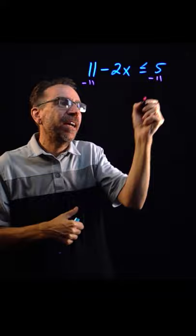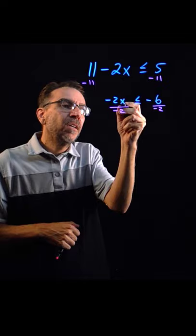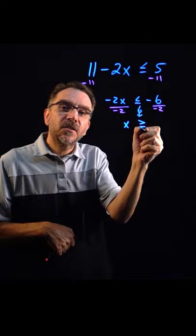The idea is we want to isolate x by itself. Now remember, whenever you divide or multiply by a negative number, you have to reverse the inequality. So you can see here I'm dividing by negative 2, so I am going to reverse that inequality and say that's greater than or equal to 3.